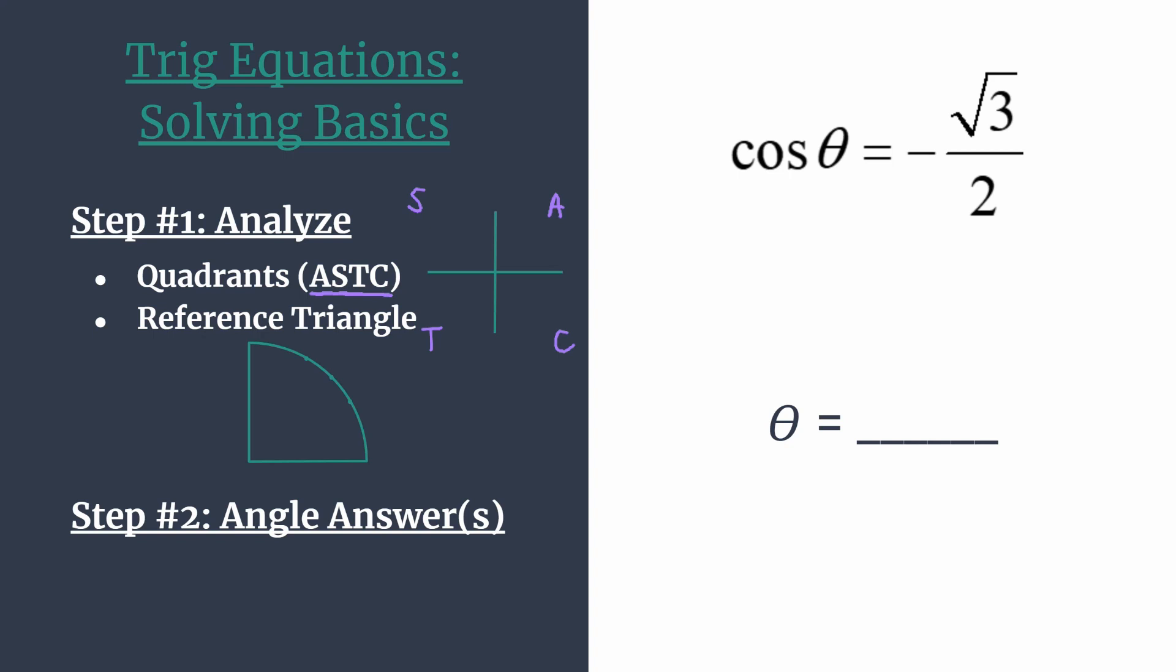In quadrant 1, the A tells you that they are all positive. In quadrant 2, the S tells you that sine and its reciprocal cosecant are the only positive trig functions. In quadrant 3, the T tells you tangent and its reciprocal cotangent are positive. In quadrant 4, that C tells you cosine and its reciprocal secant are positive.